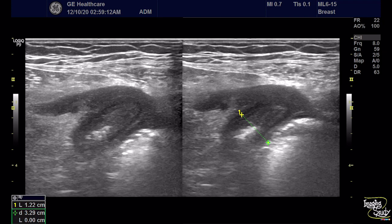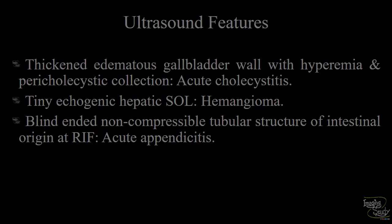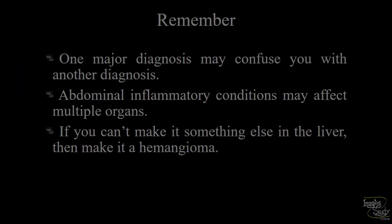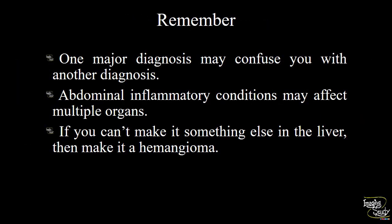The diameter of the appendix was around 12 millimeters and the gut signature was present. In summary: there is thickened edematous gallbladder wall with hyperemia and pericholecystic collection indicating acute cholecystitis; a tiny echogenic hepatic space-occupying lesion that is possibly hemangioma; and a blind-ended non-compressible tubular structure of intestinal origin at the right iliac fossa, indicating acute appendicitis.